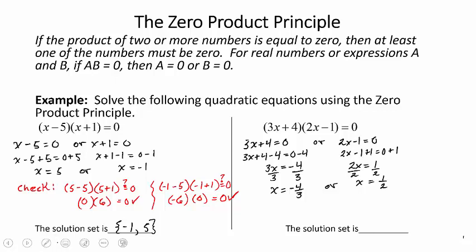And again, we can check these. So we'll have 3 times negative 4 thirds plus 4, times 2 times negative 4 thirds minus 1. Is that equal to zero? Well, in this first factor, the threes will cancel, right? So we end up with negative 4 plus 4, which is zero.